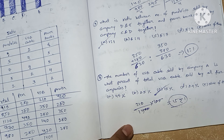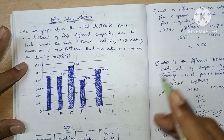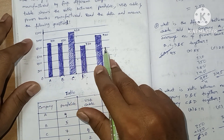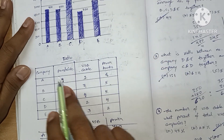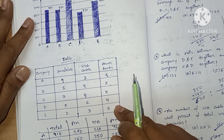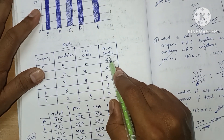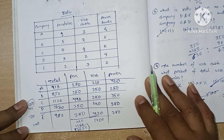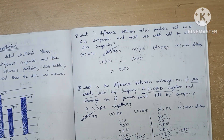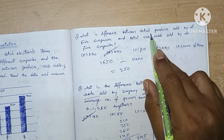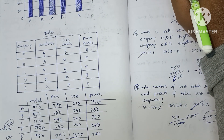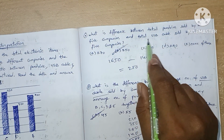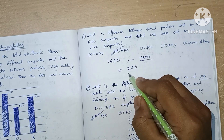Let's review this question one more time. It is given that a manufacturing company produces electronic items from five different companies, with their total values given. The electronic items are pen drives, USB cables, and power banks, and the ratios between them are given. Using the total values and ratios we made a table of individual item quantities. Now using this table we solved the questions. Question one asked about total pen drives sold by all five companies — the value is 1650 — subtracted from total USB cables sold, which is 1400. We got 250 as our answer.